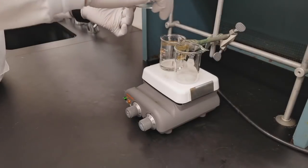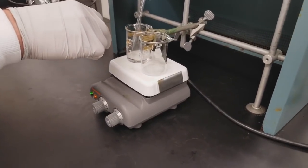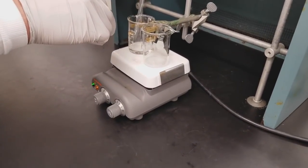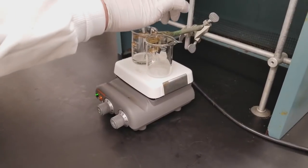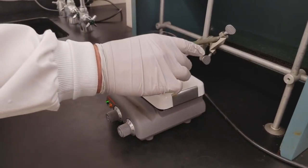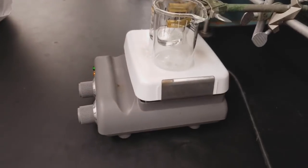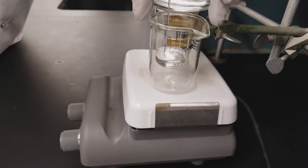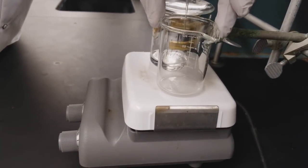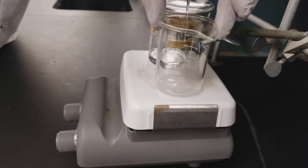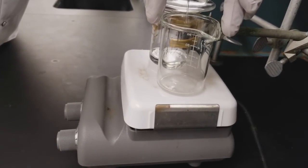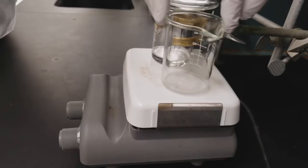We're going to want to swirl the beaker as we add additional hot solvent. So we're just taking up some more ethanol and then adding it to our beaker in a drop wise slow fashion. Continue to swirl the flask and look for all of our solid to dissolve.